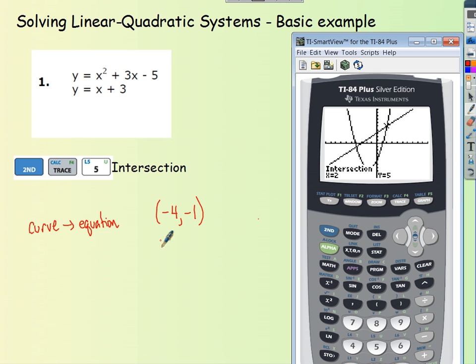And I find out that I have my other intersection at 2 comma 5. Alright, those are my two solutions.